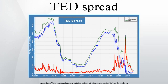The TED spread is an indicator of perceived credit risk in the general economy, since T-bills are considered risk-free while LIBOR reflects the credit risk of lending to commercial banks. An increase in the TED spread is a sign that lenders believe the risk of default on interbank loans is increasing. Interbank lenders therefore demand a higher rate of interest, or accept lower returns on safe investments such as T-bills. When the risk of bank defaults is considered to be decreasing, the TED spread decreases.